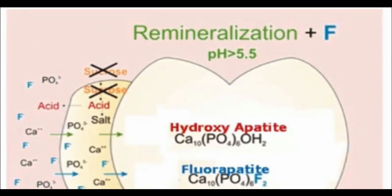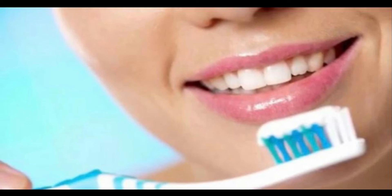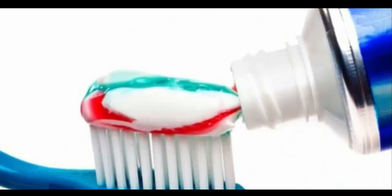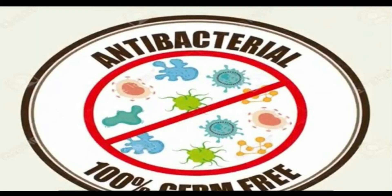The other toothpaste ingredients include abrasives, which are used for cleaning and polishing away dental plaque and food debris. Binders, which can be natural or synthetic polymers, are used to stabilize toothpaste formulations and prevent separation of the liquid and solid phases. Humectants prevent loss of water and subsequent hardening of the product upon exposure to air. Flavors and sweeteners improve the taste of the toothpaste, and preservatives prevent the growth of bacteria or other microorganisms in toothpaste.